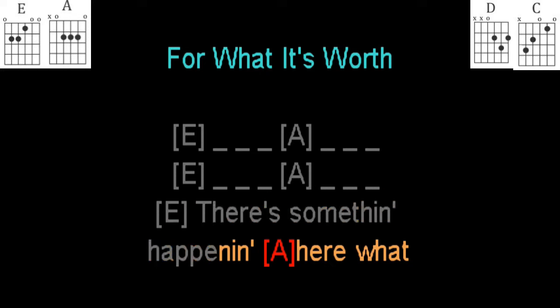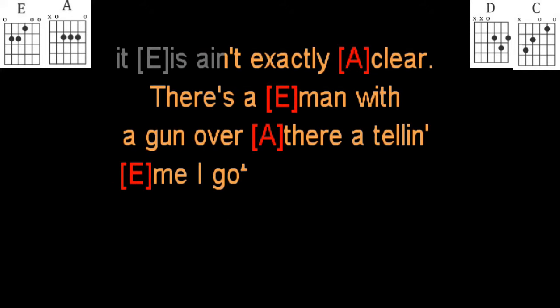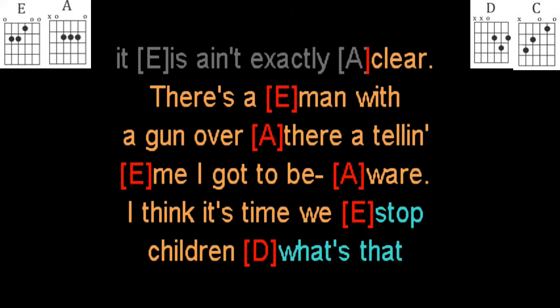There's something happenin' here, what it is ain't exactly clear. There's a man with a gun over there, tellin' me I've got to beware.